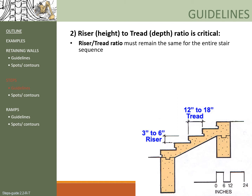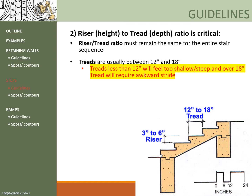There is an appropriate range for both the tread and the riser dimensions. Treads should be between 12 and 18 inches deep. Those less than 12 inches will feel too shallow and steep, and those over 18 inches will require an awkward stride. Note that this refers to stairs designed for people to take consecutive steps, not ones functioning as sitting areas, for example like the one in the South Warren in Stuckman building.